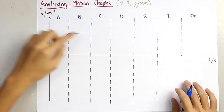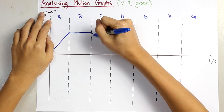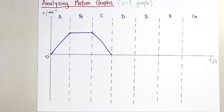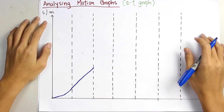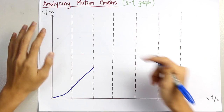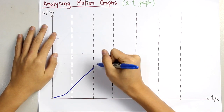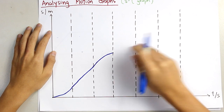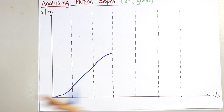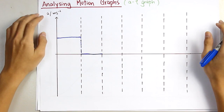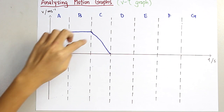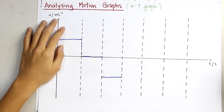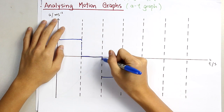For section C, you are given this straight line going to zero. For the ST graph, since it was moving to zero, the gradient of the curve is decreasing, so it will be a curve with decreasing gradient. And for the AT graph, as you can see, it's decreasing velocity, so it will be a deceleration, or you can say it as negative acceleration.